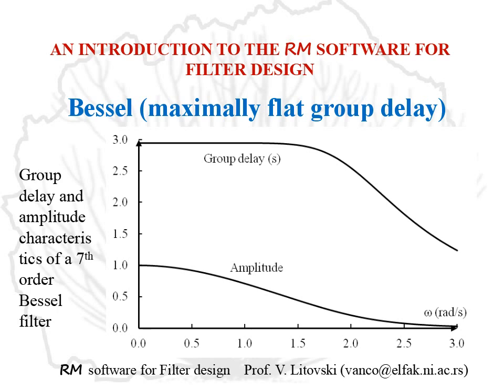Here is the group delay and the amplitude characteristic of a seventh-order Bessel filter. Note that the passband is from 0 to omega equals 1, and that the group delay is constant in a frequency band which is almost 60% larger than the passband.